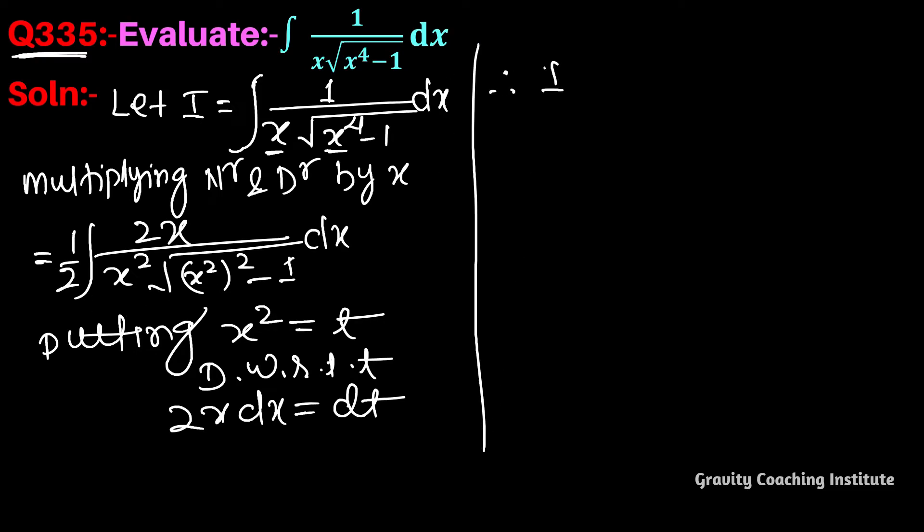Therefore I equals 1 by 2 into the integration of, since x squared is t, this becomes t into square root of t squared minus 1, and 2x dx becomes dt.